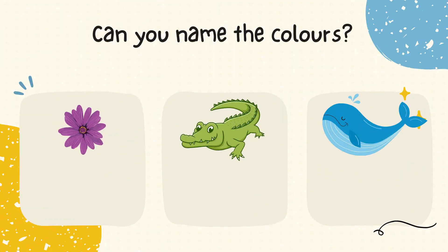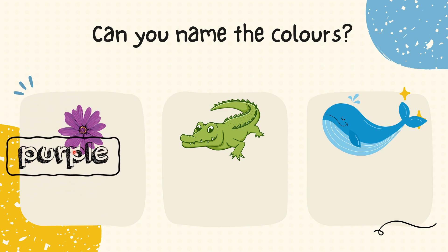Look at the colours. Can you name the colours? Let's start. Look at the first picture given. Do you know what colour is the flower? That's right, it's purple.